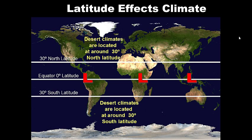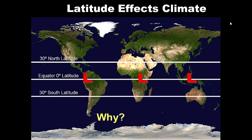You may have noticed that many of the world's great deserts lie around 30 degrees north and south latitude. Australia is essentially one big desert, South Africa has its desert, the Atacama desert is here, and there's desert in Mexico. So desert climates are located at around 30 degrees north and south latitude — but why is it dry there?